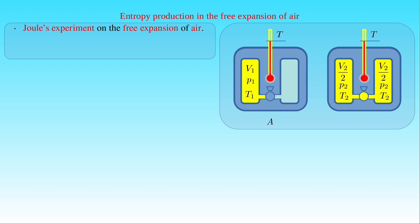If we open the valve separating the containers, the gas will expand and fill the evacuated container, reaching the final state B. The volume after expansion is V2, equal to two times the initial volume V1. Since Joule was not able to measure any difference between the initial and final temperature, T1 equals T2, and the expansion of the air can be considered as an isothermal process.